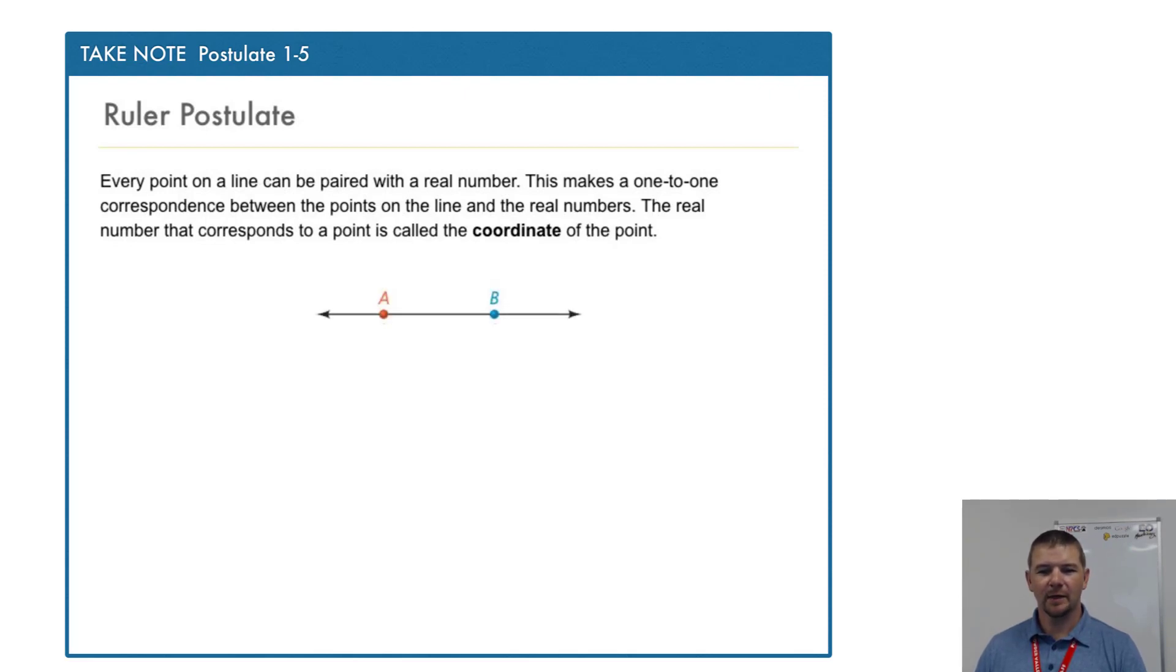Notice here line AB. On a ruler we can see the coordinate of point A and similarly the coordinate of point B.